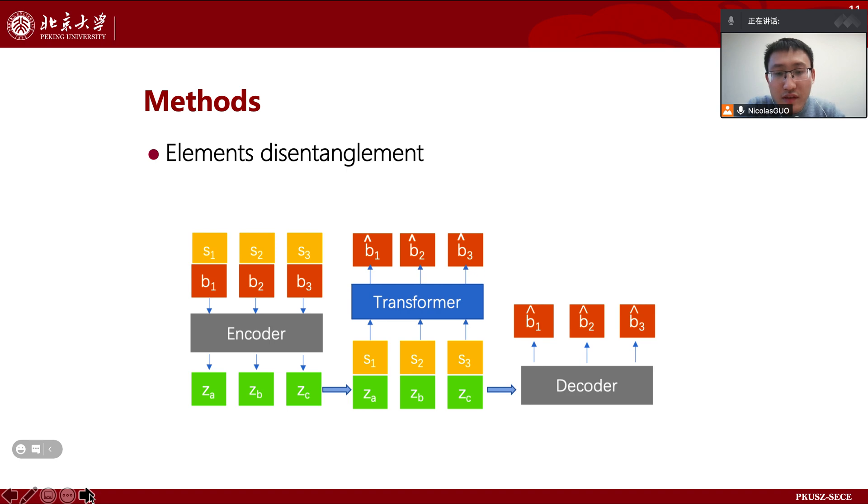The first strategy is element disentanglement. Unlike typical VAE models, each graphic design component is mapped independently into a latent vector. This is different from mapping all components into a single vector.